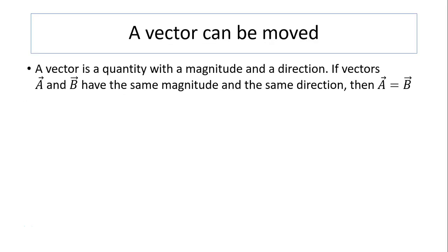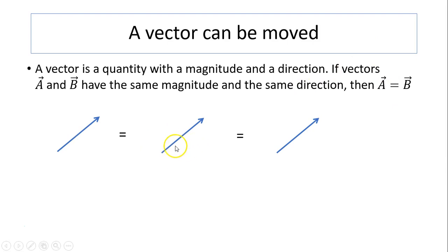A vector can be moved. A vector is a quantity with a magnitude and a direction. If vectors a and b have the same magnitude and same direction, then a equals b. For example, all these three vectors have the same magnitude and same direction. Therefore, they are equivalent. Since they are equivalent, you can move a vector to any place as long as it has the same magnitude and direction — it is the same.